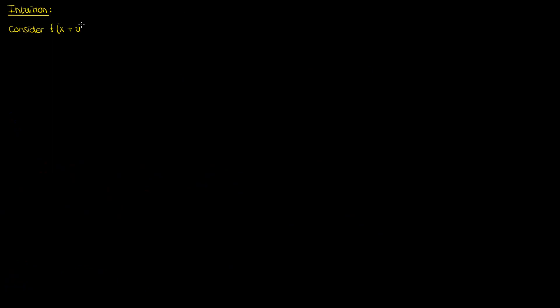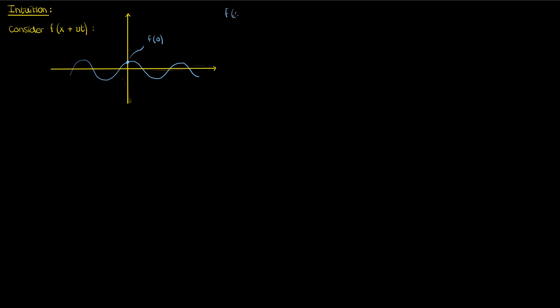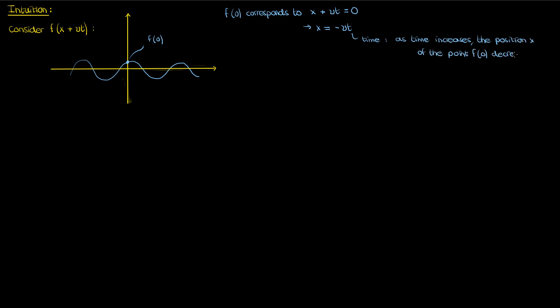Let's consider a generic function f of x plus vt that looks something like this. The horizontal axis represents the argument of my function and the vertical axis is the value of my function. Let's label the point f of zero — the value of f corresponding to an argument of zero. When my argument is zero, that just means that x plus vt is zero, so x equals negative vt. This means that if t is time, then as time increases, the position x of the point f of zero decreases. If this initial graph corresponds to time zero, then the position of the point f of zero is at x equals zero.